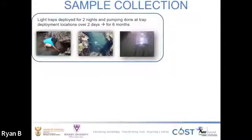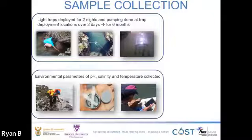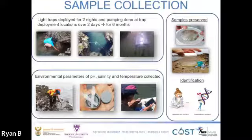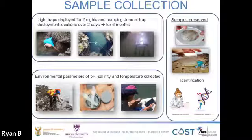Samples were collected using light traps and a submersible pump, which targeted and collected phototactic and photoneutral larval species respectively. Light traps were deployed for two nights, and pumping was done at deployment locations over two days, across six consecutive months during spring low tide. Environmental parameters of pH, salinity, and temperature were also collected over the sampling period. All preserved specimens were counted and identified to the lowest possible taxonomic level using a microscope, as well as DNA barcoding techniques.